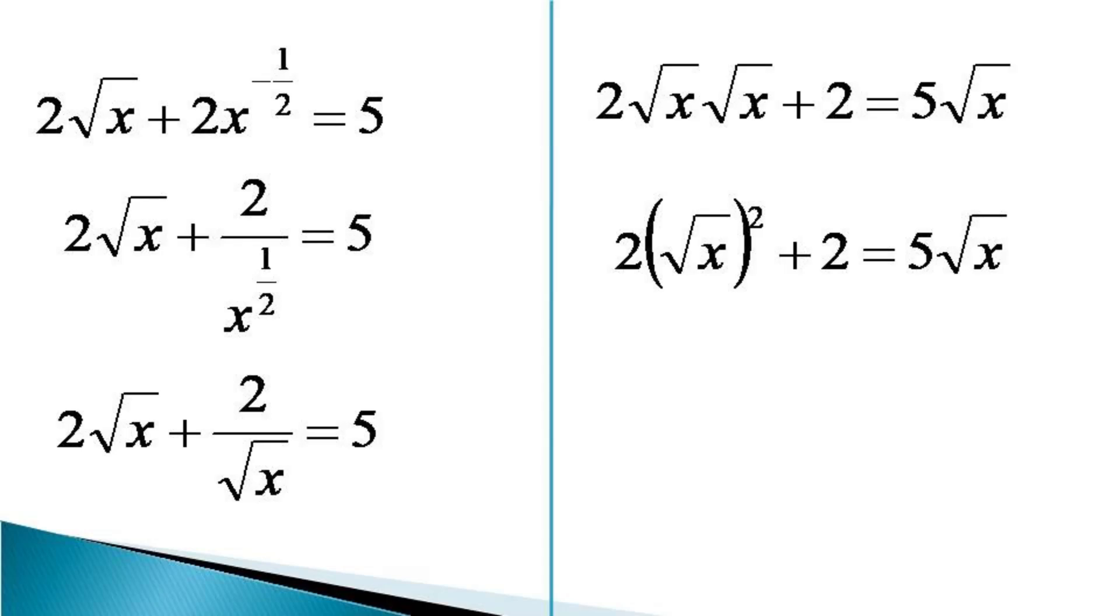Bringing all the terms on the left-hand side and slightly readjusting, we get an equation as 2(√x)² minus 5√x plus 2 equals 0.